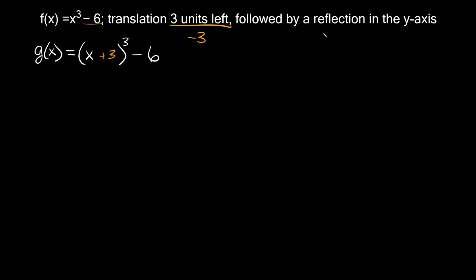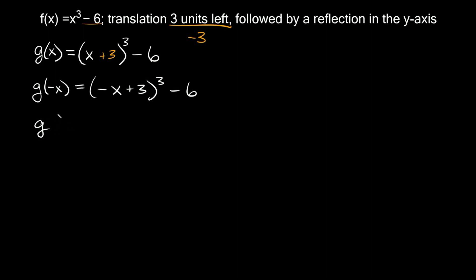The other transformation we have to apply says followed by a reflection in the y-axis. Now if you reflect something in the y-axis, that's the same thing as turning your x's negative. So wherever I have an x, I need to put a negative x. Then here we're going to have negative x plus three, that's cubed and then minus six. So g of x is equal to, in parentheses, negative x plus three, cubed, minus six.